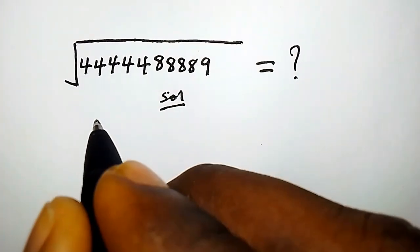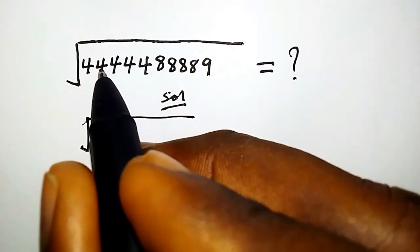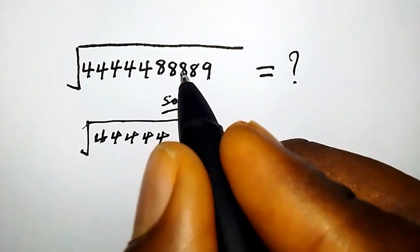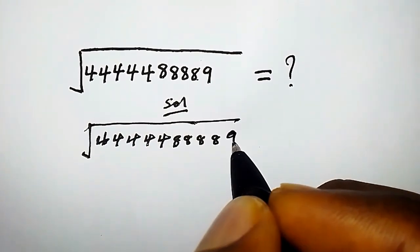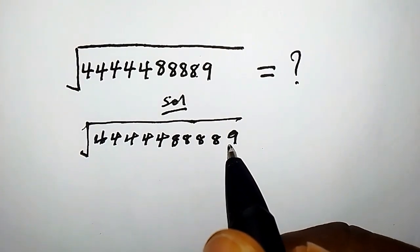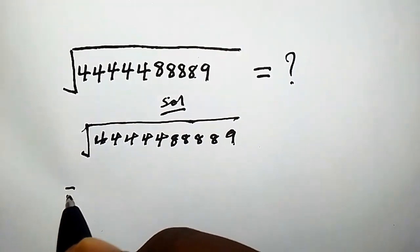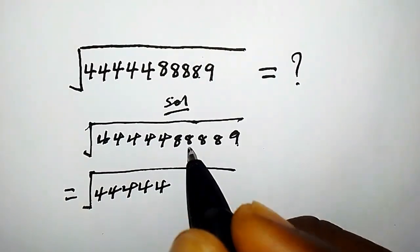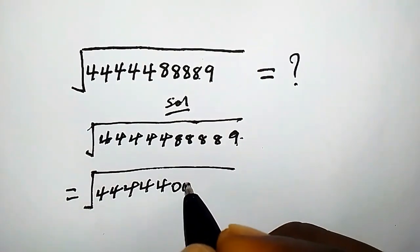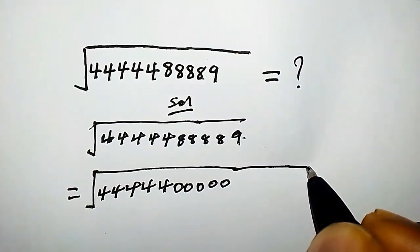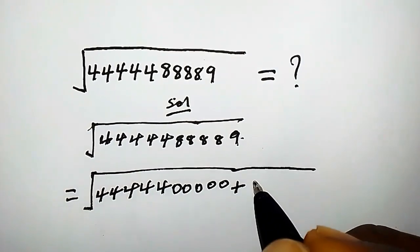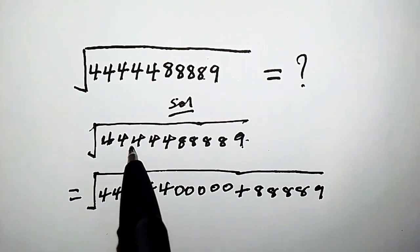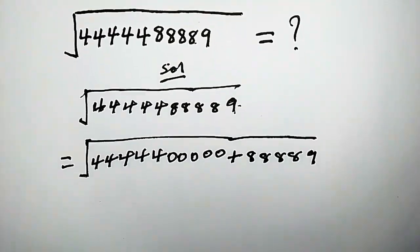Let's dive into the solution. We have the square root of a number with five 1s, four 8s, and a 9 at the end. The trick is that we are going to turn these last five figures into zero, starting from the 8s and 9. So this equals the square root of 12345 followed by zeros, plus 88889, because when you add these together you get the original number back.